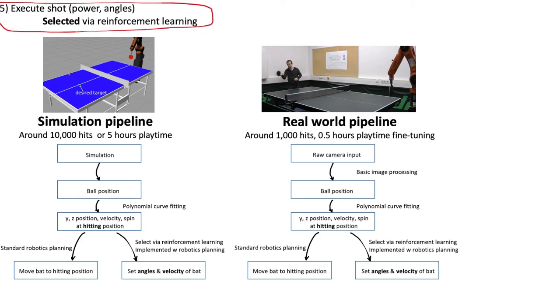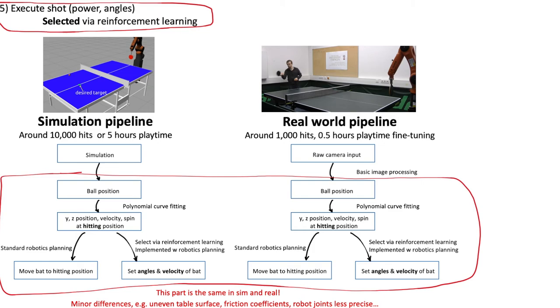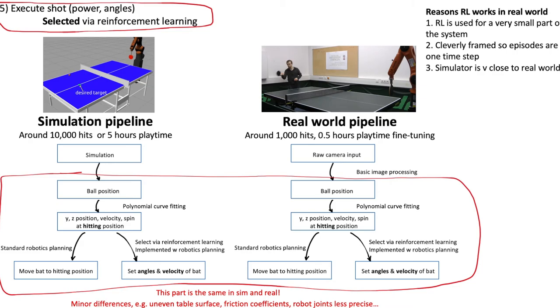The key insight that explains why the sim-to-real process is so smooth, I think, is that the input to the reinforcement learning component doesn't really change regardless of whether this is running in the simulator or the real world. In the simulator you directly have access to the ball position, whereas in the real world we need to do the image processing and triangulation steps first. But after that point the pipeline is basically the same for both. The reason they still need to do some fine tuning is to adapt to any small changes experienced in the real world. For example, maybe there's a slight breeze in the lab or the table is not perfectly level.